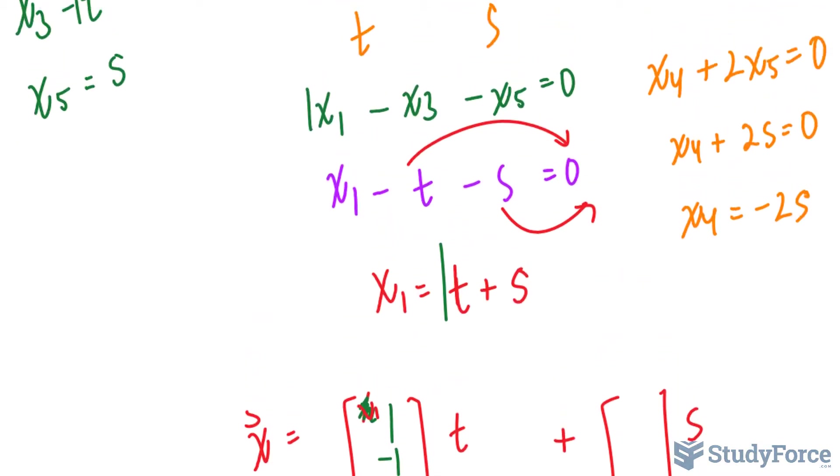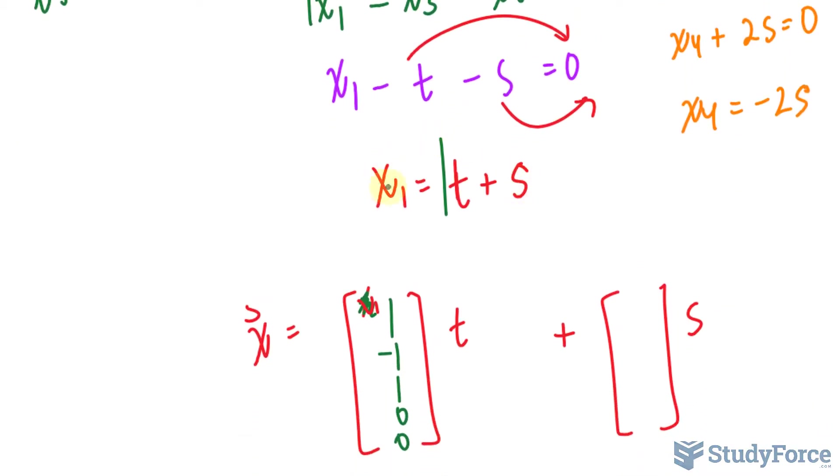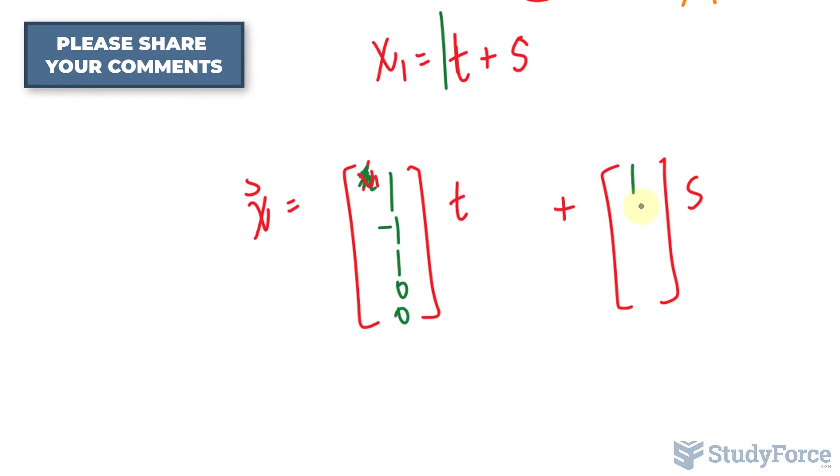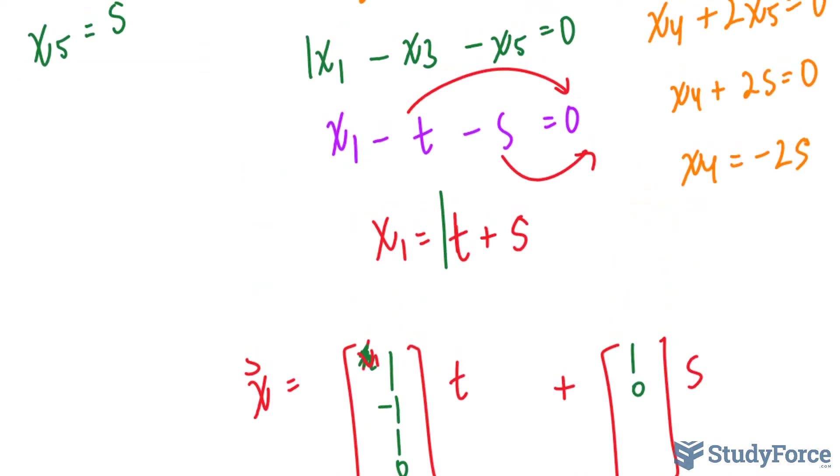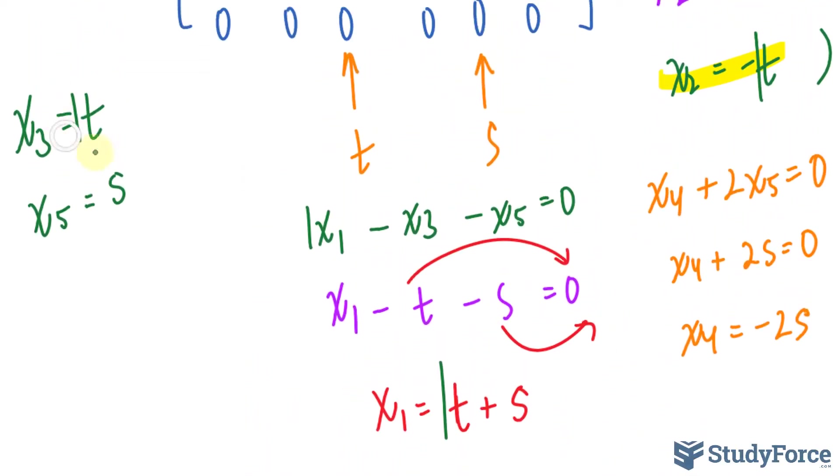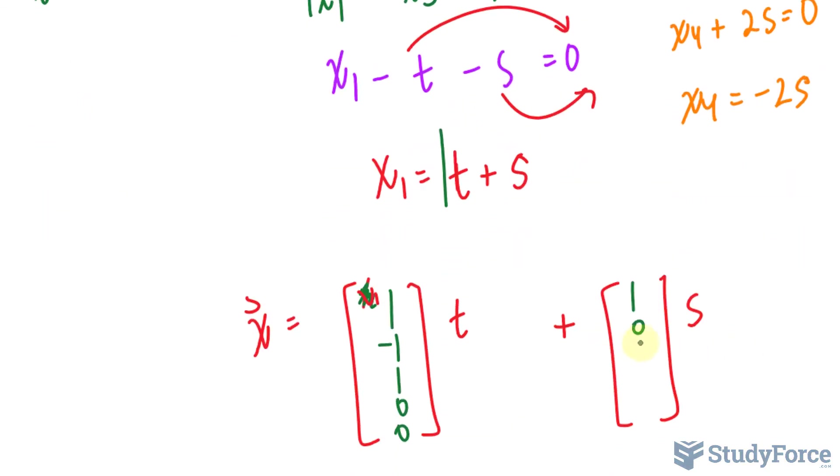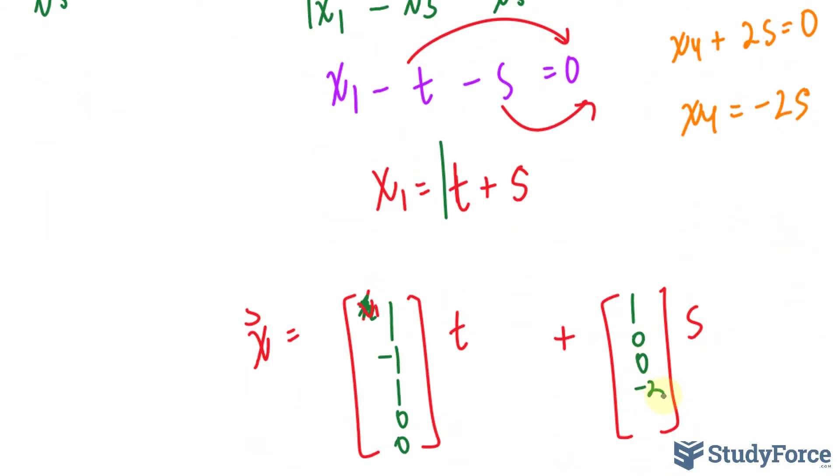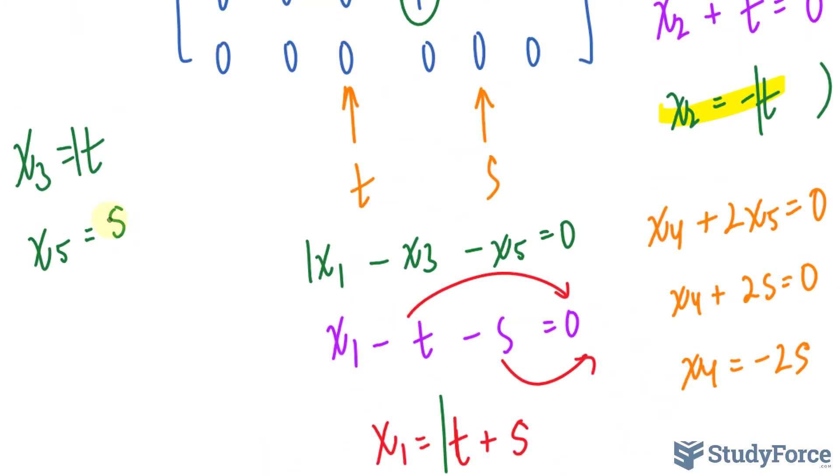For this column vector, we do the same thing. S related to x sub 1 has a coefficient of 1. S related to x sub 2, there is no relationship. So, it's 0. X sub 3, there's no relationship with s. So, it's 0 again. X sub 4, there is a relationship. It's negative 2. And for x sub 5, it's 1.